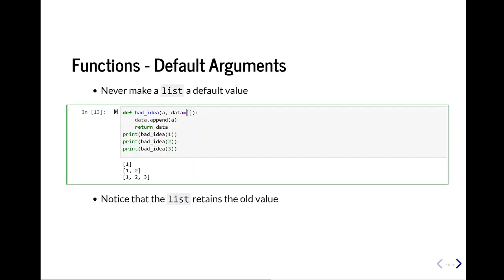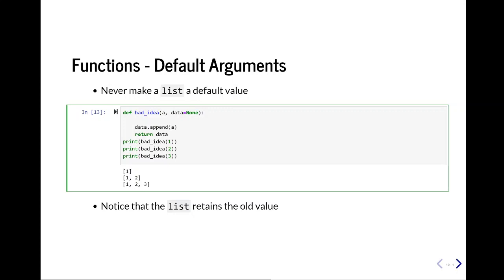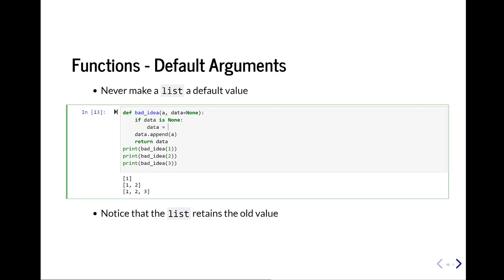If data equals none, set data equal to none. If data is none, data equals empty list. And now when we go ahead and we append our data, we should get the expected results, where we should just have a single list with 1, 2, and 3.